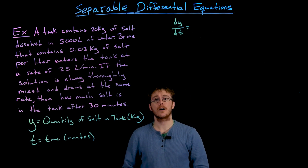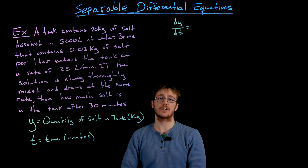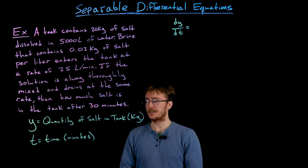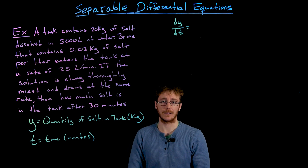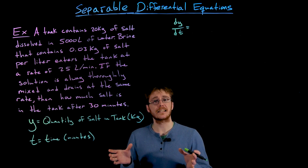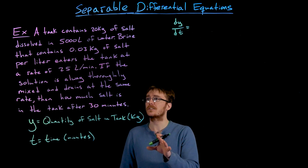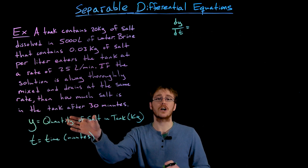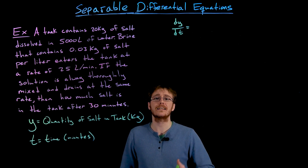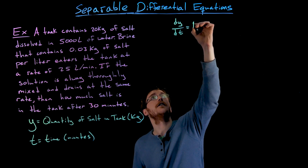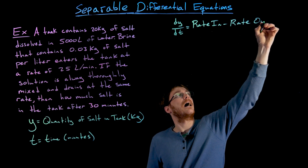We have to carefully set up a differential equation that models this situation, starting by thinking about the rate of change dy/dt. This derivative represents the instantaneous rate of change of the amount of salt in the tank with respect to time. It's easier to think of it as two separate pieces: the rate of change equals the rate in minus the rate out of our tank.